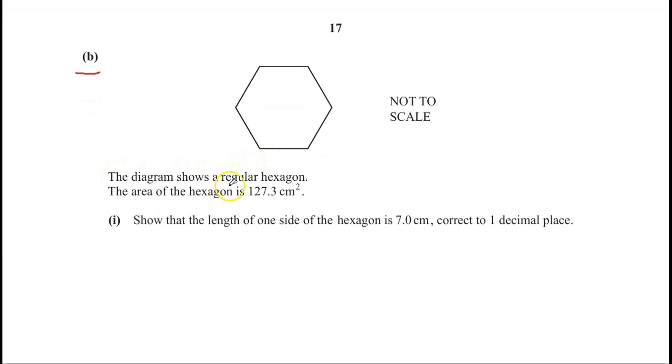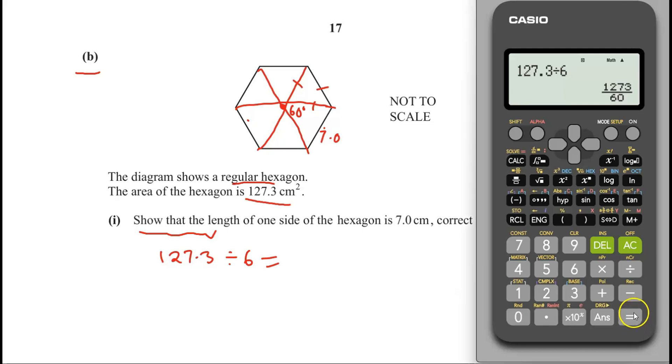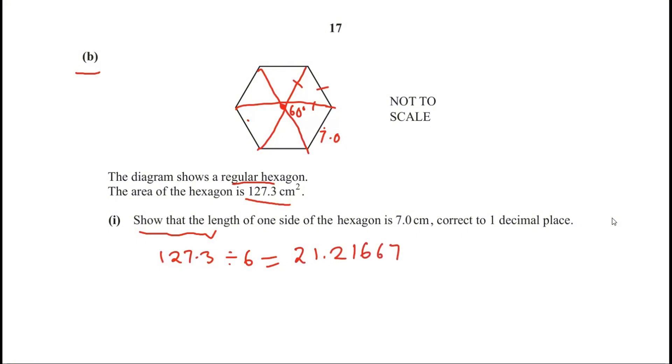In part B, there is a regular hexagon. Area is 127.3 squared centimeters. We need to show the length of one side is 7.0 centimeters, correct to one decimal place. So there are different ways of doing this. Let's draw a diagonal, all the three diagonals. And the angle at the center is going to be 60 degrees. These are all equilateral triangles. So all must be 7 centimeters. We know if we find area of one triangle. So let's divide 127.3 by 6. That is equal to 21.216666. So let me round it to five decimal places. 21.21667.